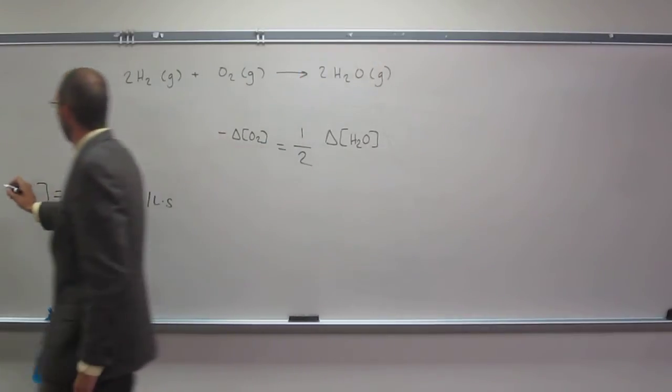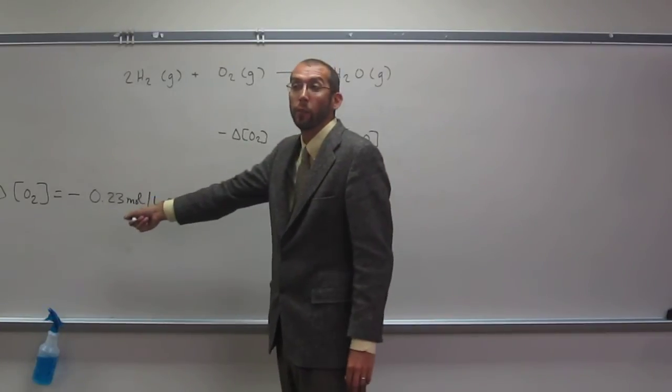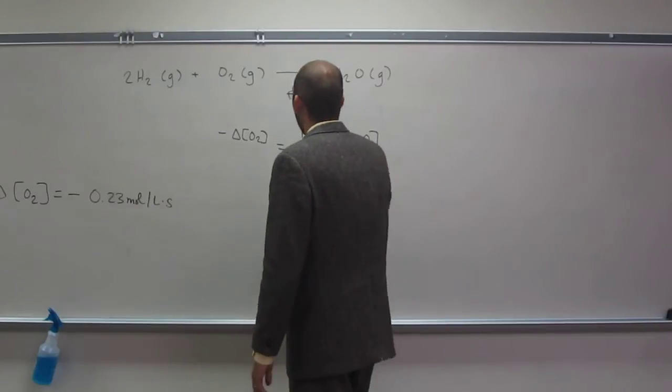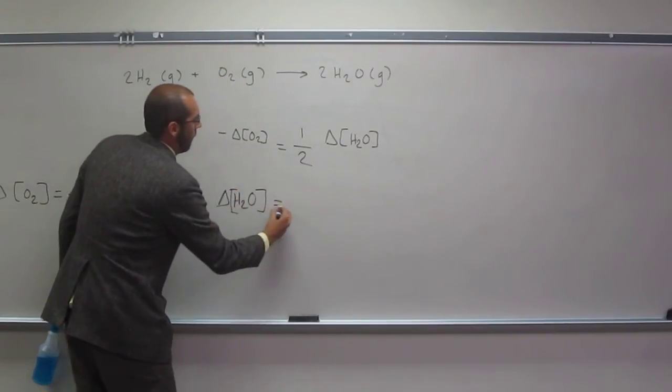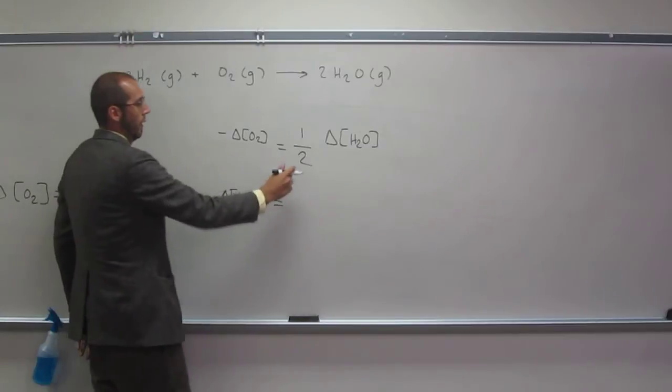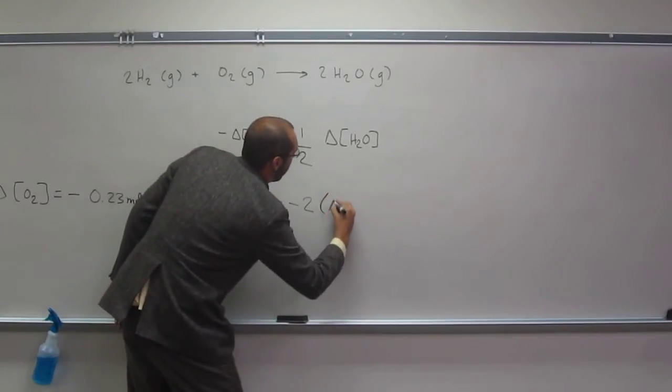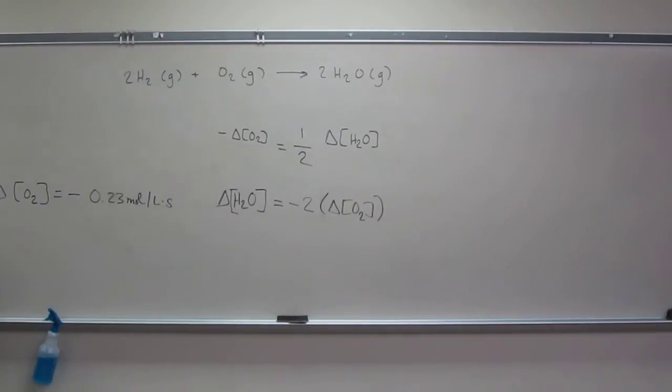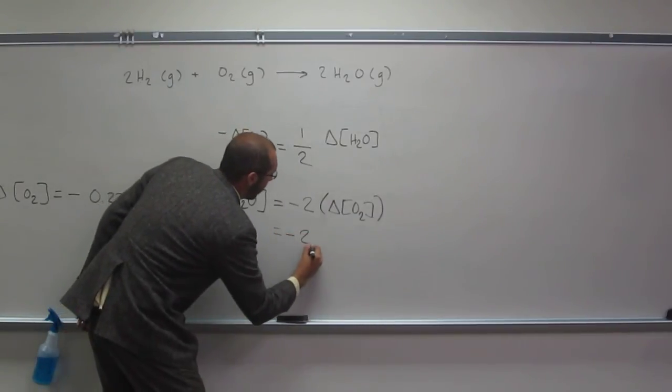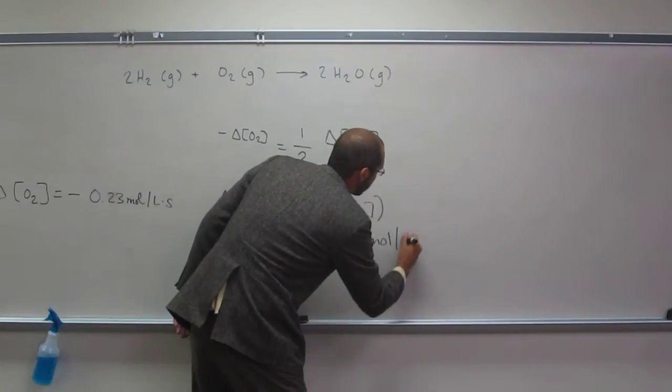What do we know about the change in O2 concentration? It's going to be negative 0.23 moles per liter second, right? So what would be the change in water concentration? So, negative 2 times the change in O2 concentration. Is everybody okay with us doing that? Just rearranging that thing. So when we do that, negative 2 times the negative 0.23, it's going to be 0.46 moles per liter second.